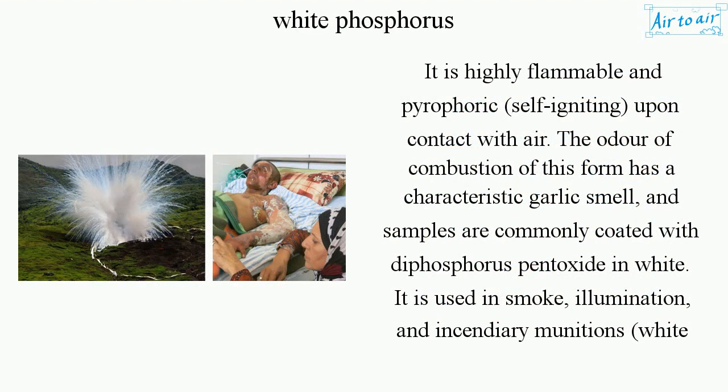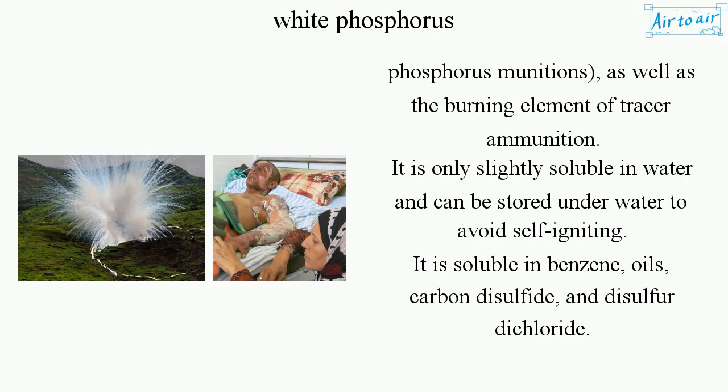The odor of combustion of this form has a characteristic garlic smell, and samples are commonly coated with diphosphorus pentoxide in white. It is used in smoke, illumination, and incendiary munitions — white phosphorus munitions — as well as the burning element of tracer ammunition.